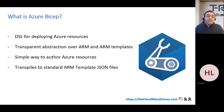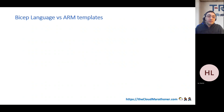Azure Bicep is the simplest way to create and manage your Azure resources. When you deploy Azure Bicep code, it gets transpiled into standard ARM templates. In summary, Azure ARM templates is a templating engine where you declare your resources as a JSON file, while Azure Bicep is a way to define resources as code.